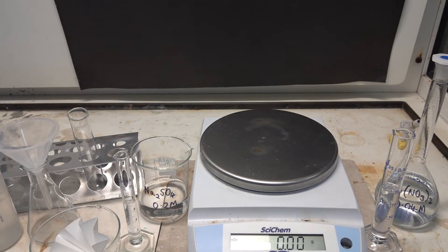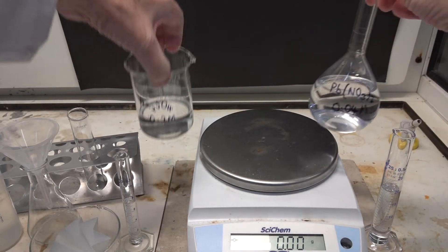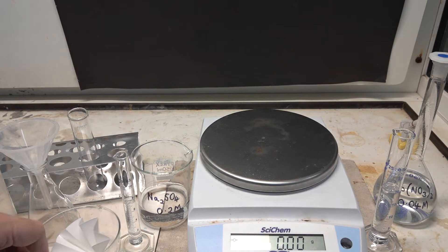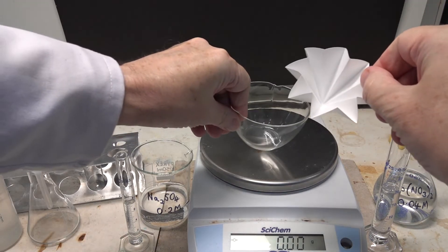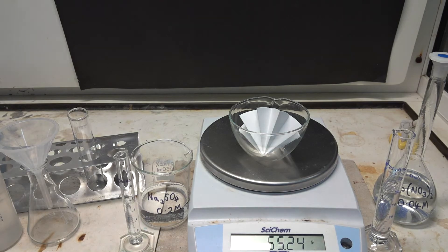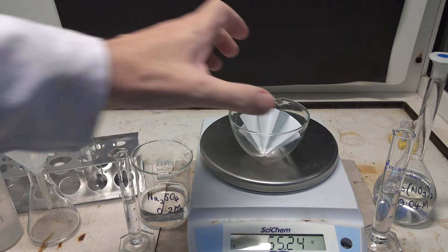Making lead 2 sulfate. In this experiment we'll be reacting lead 2 nitrate with sodium sulfate, but we start by weighing this fluted filter paper in an evaporating basin, and that's 55.24 grams.